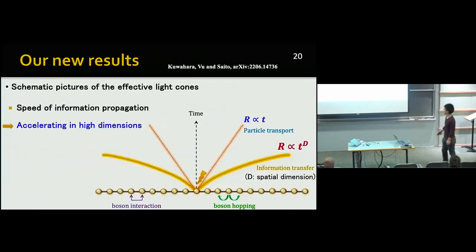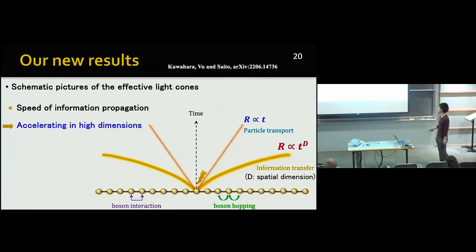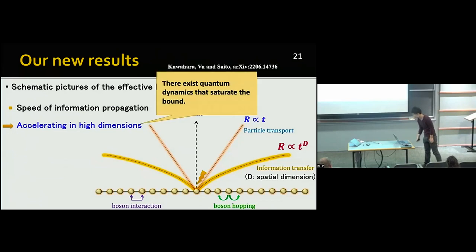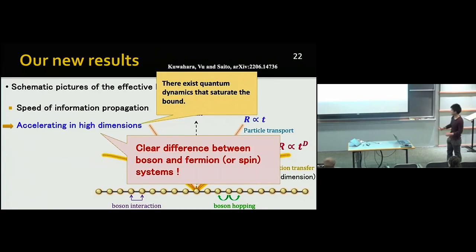Our result is described by this picture. The particle transport has finite speed, but the information propagation can be accelerated in high-dimensional systems. From the Yin and Lucas results, information propagation has finite speed in 1D. Our result is consistent with theirs. The key point is that we can explicitly construct quantum dynamics that saturates this effective light cone. So the light cone shape of T to the power of D is optimal. A second important point is that this kind of acceleration never happens in spin or fermionic systems. This characterizes a clear difference between bosonic and fermionic systems.